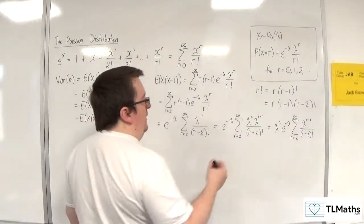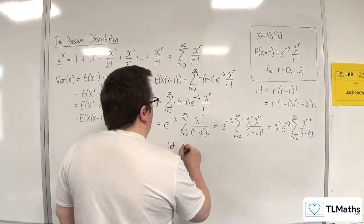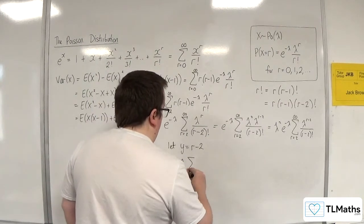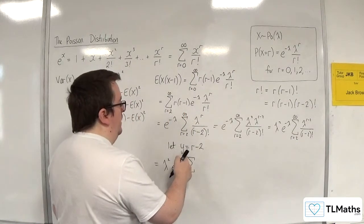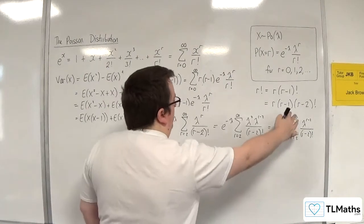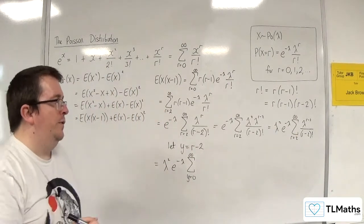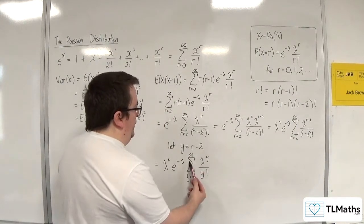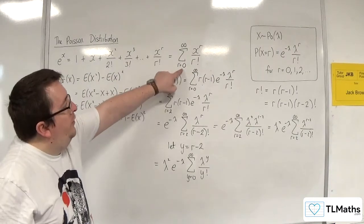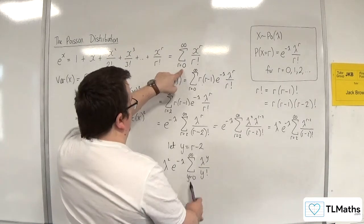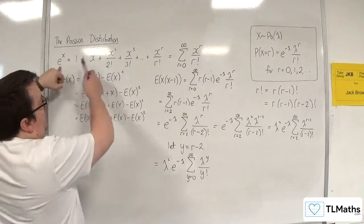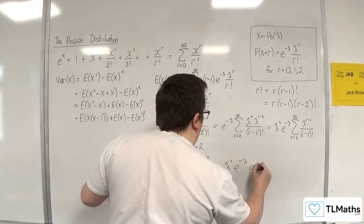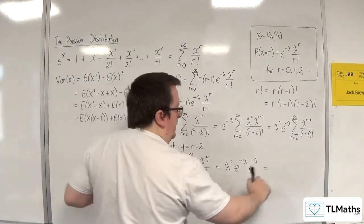I'll introduce a substitution to make this more obvious. Let Y equal R minus 2. The summation starts at R equals 2, so when R is 2, Y is 0; and as R goes to infinity, Y also goes to infinity. This gives lambda squared, E to the minus lambda, times the summation from Y equals 0 to infinity of lambda to the Y over Y factorial. That summation is precisely the Taylor series for E to the X — just with a different letter — so this is E to the lambda. We have lambda squared times E to the minus lambda times E to the lambda, which equals lambda squared times 1, giving us lambda squared.